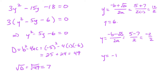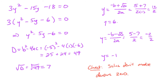The only thing left to check is that the solutions don't make the denominator zero. Going back to the original equation, the denominators were y plus 3, y squared minus 9, and y. Neither y equals 6 nor y equals negative 1 makes any of those zero. So in this case I have two valid solutions: y equals 6 and y equals negative 1.